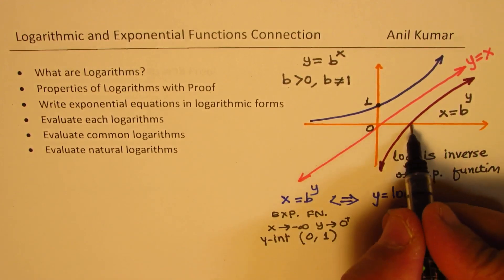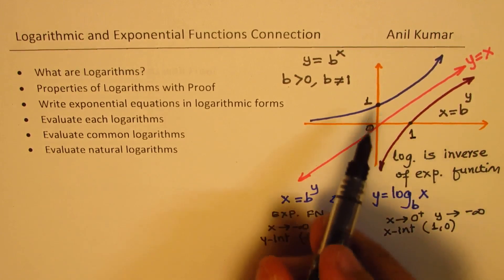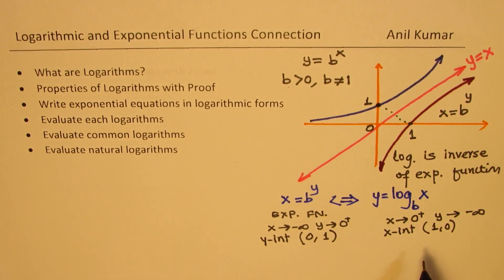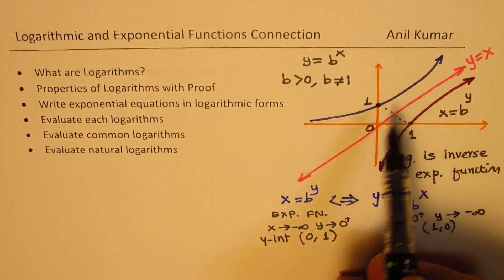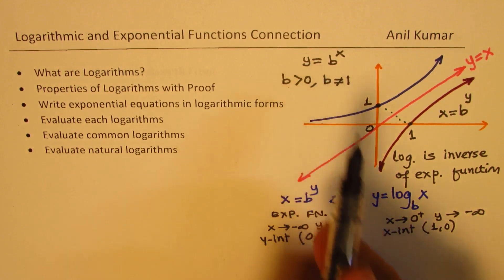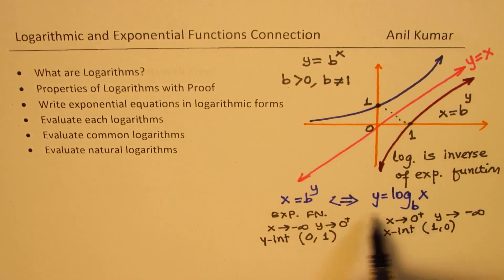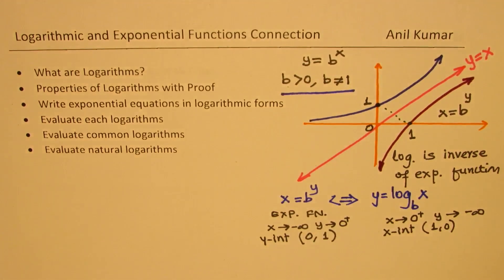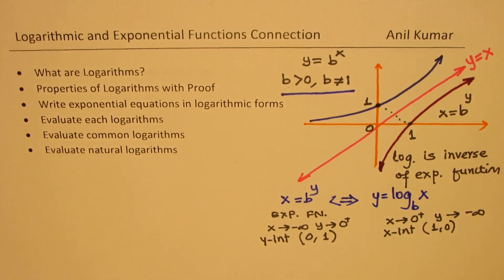This confirms it is indeed the inverse — a mirror image. For b, we have the same restrictions on both sides: the base must be non-negative but cannot be 1, since 1 to the power of x is not an exponential function — it's a constant. That is the major property we are looking into.